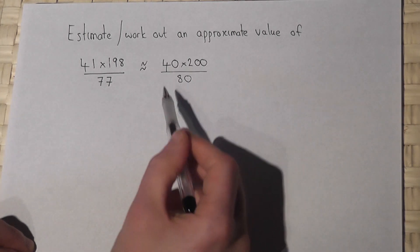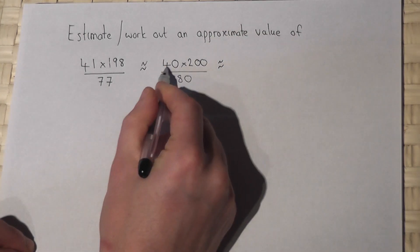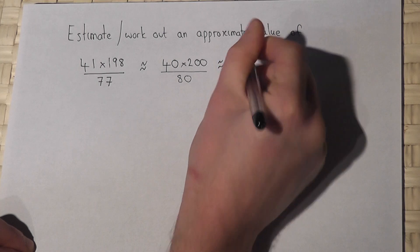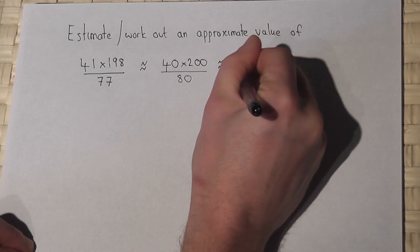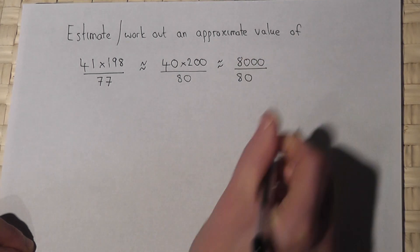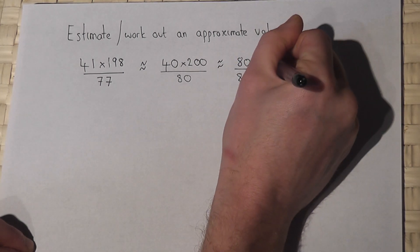Now there's lots of ways to work this out. 4 times 2 is 8, with 1, 2, 3 zeros, all over 80. I can cancel off like so.